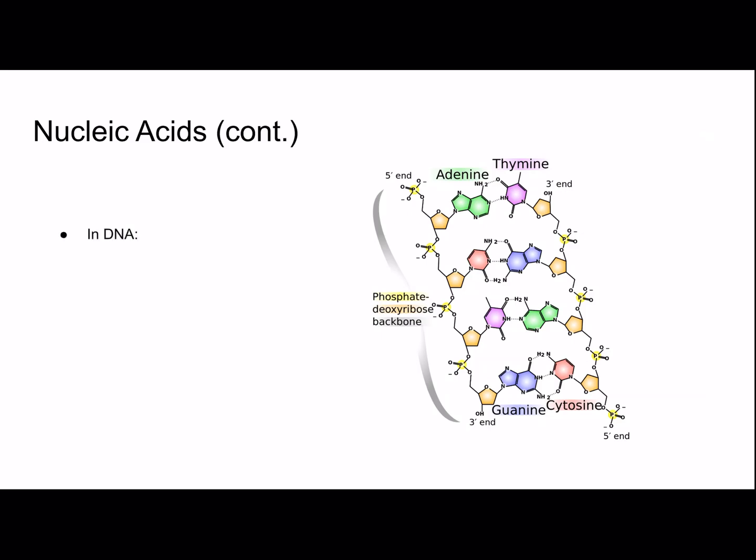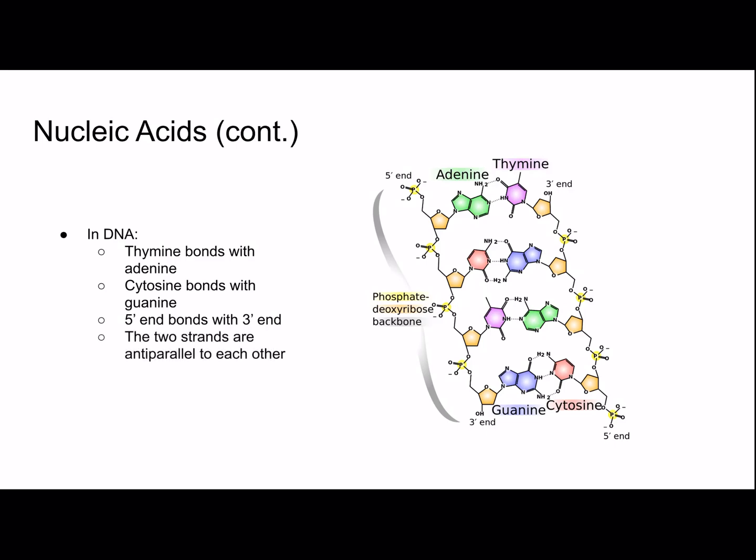A little bit more about nucleic acids. In DNA, thymine will bond with adenine, and cytosine will bond with guanine. The five prime end will bond with the three prime end, as you can see in the picture. The five prime end is where the phosphate group is at the top, and the three prime end is where the phosphate group is at the bottom. This is why the strands are said to be antiparallel — they're parallel but flipped. The five prime end will be with the three prime end, and three prime and five prime will always match up.